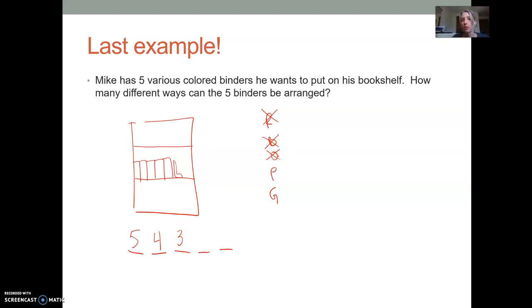Now there's three on the shelf and two still sitting on the ground or wherever Mike has them. Now there's only two left. And then finally, at the end, you're not gonna have a choice, right? There's only one binder sitting on the floor, that one has to go all the way to the right. Then what does the counting principle tell us to do? It tells us multiply these together. When we multiply five times four times three times two times one, we do end up with, well, let's see, that's 20. That's 120. So there'd be 120 ways that Mike could arrange these binders.